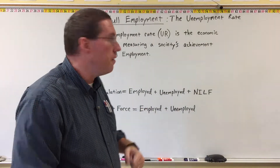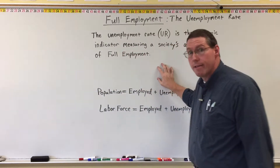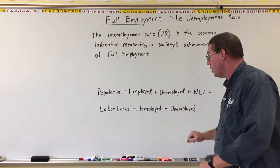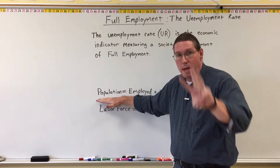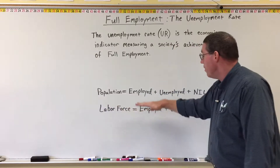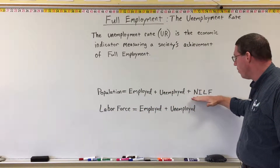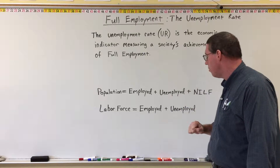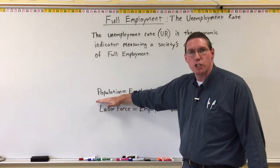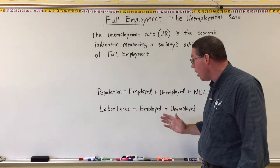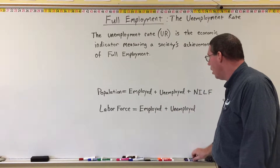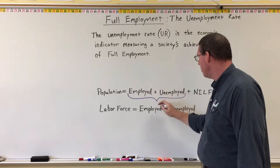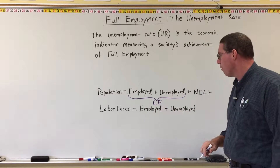Before I give you the formula, there are a couple of things you need to understand. First, the population of an entire country is made up of three kinds of people: the employed, the unemployed, and all those not in the labor force. If you add all three groups together, you get the population of that country. The labor force is made up of just those who are employed and those who are unemployed.